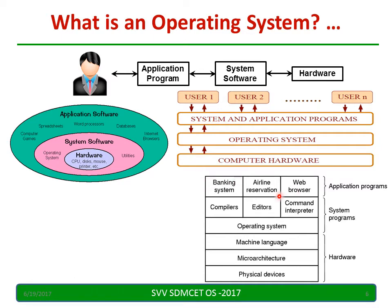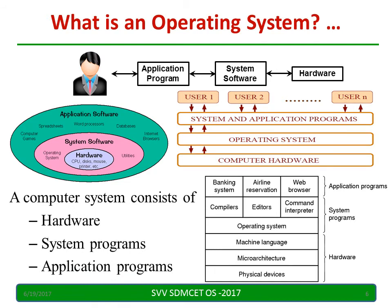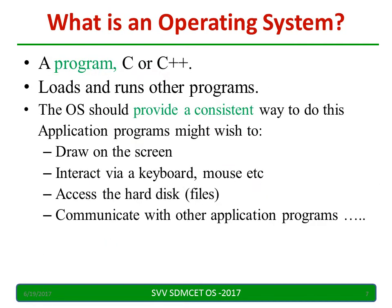Examples of application programs include a banking system, airline reservation, and web server. Compilers, editors, and command interpreters are system programs. Below system programs we have the operating system, and below that we have the physical devices. When you take a computer system, it consists of hardware, system programs, and application programs. The OS is itself a system program — basically it is a program, possibly written in C or C++, and what it does is load and run other programs.